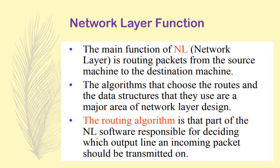We will go through these fundamental issues and then discuss the three fundamental methods of routing. The main function of the network layer is to provide a proper method or guide for packets — how to get an optimized path, how to travel, and which particular route is to be preferred. In essence, the main function is routing packets from the source machine to the destination machine. The algorithms that choose routes and the data structures they use are a major area of network layer design.